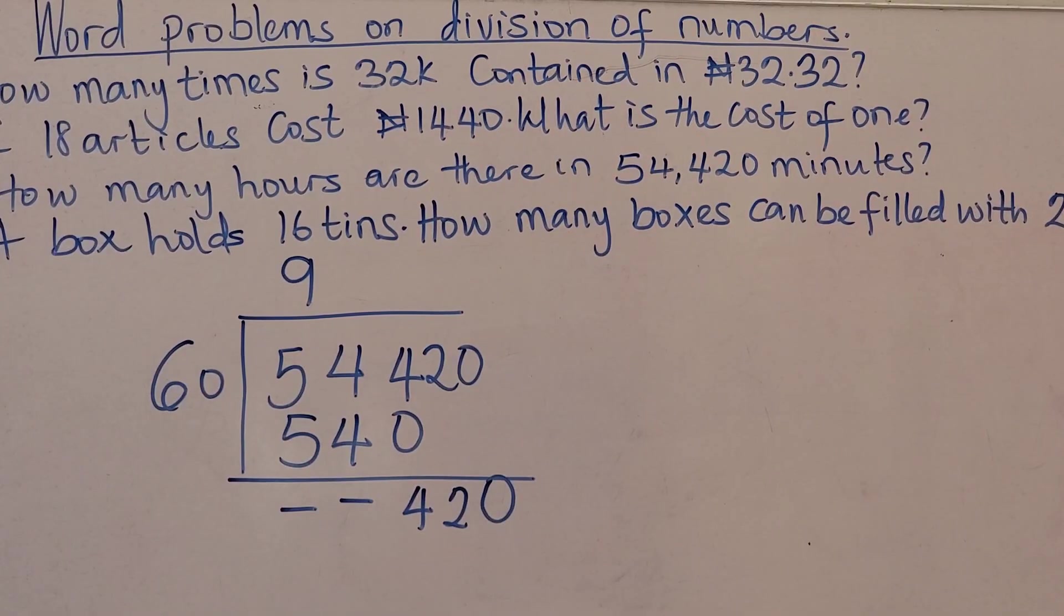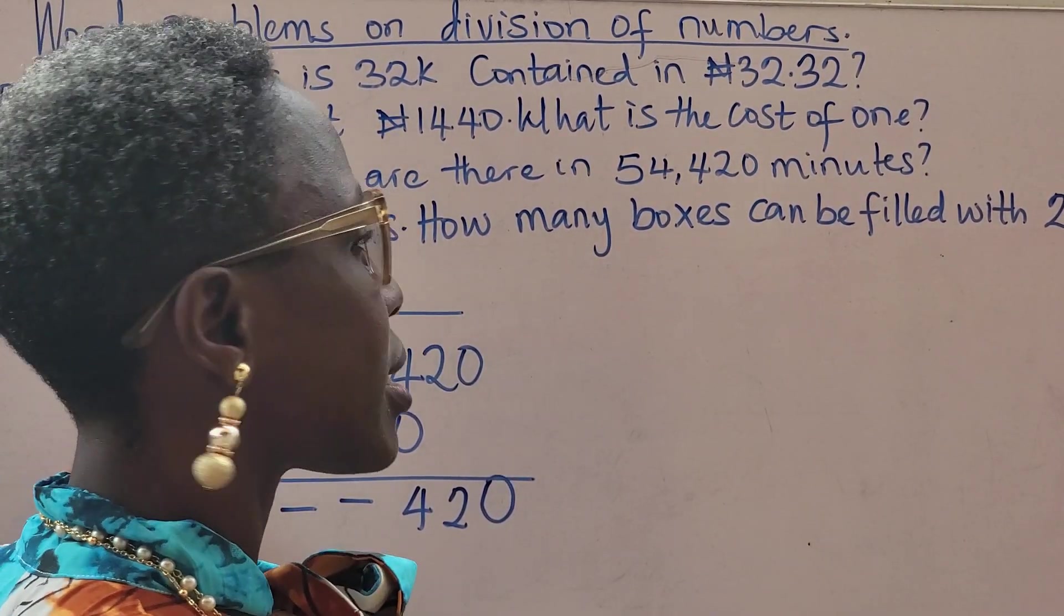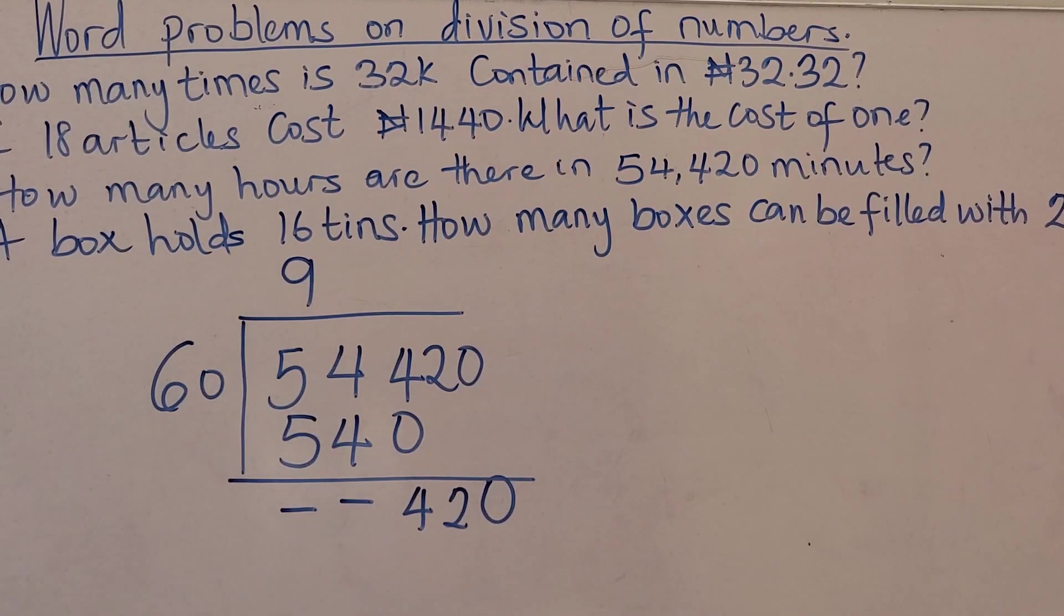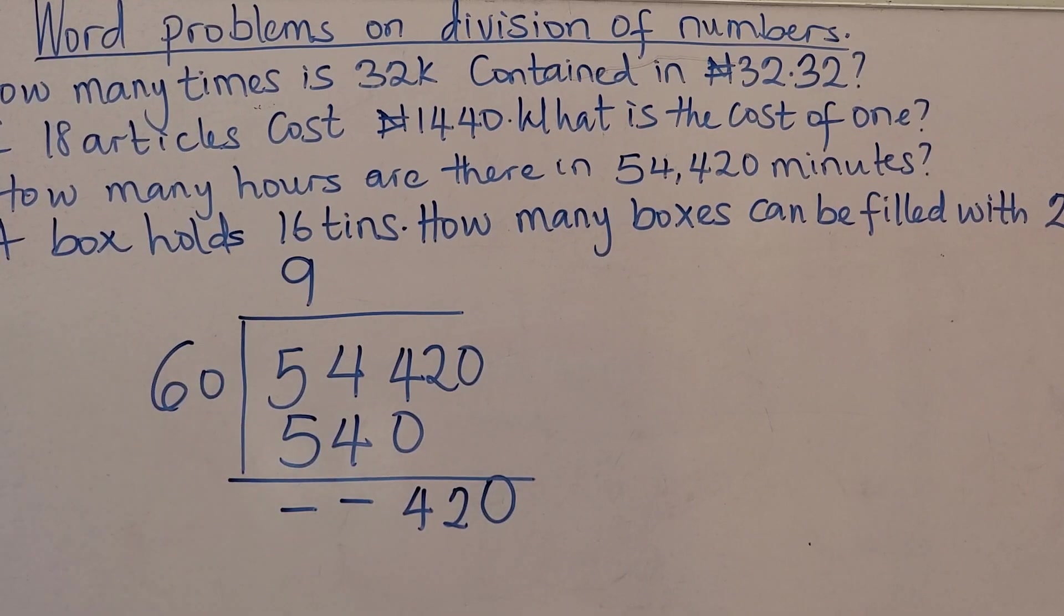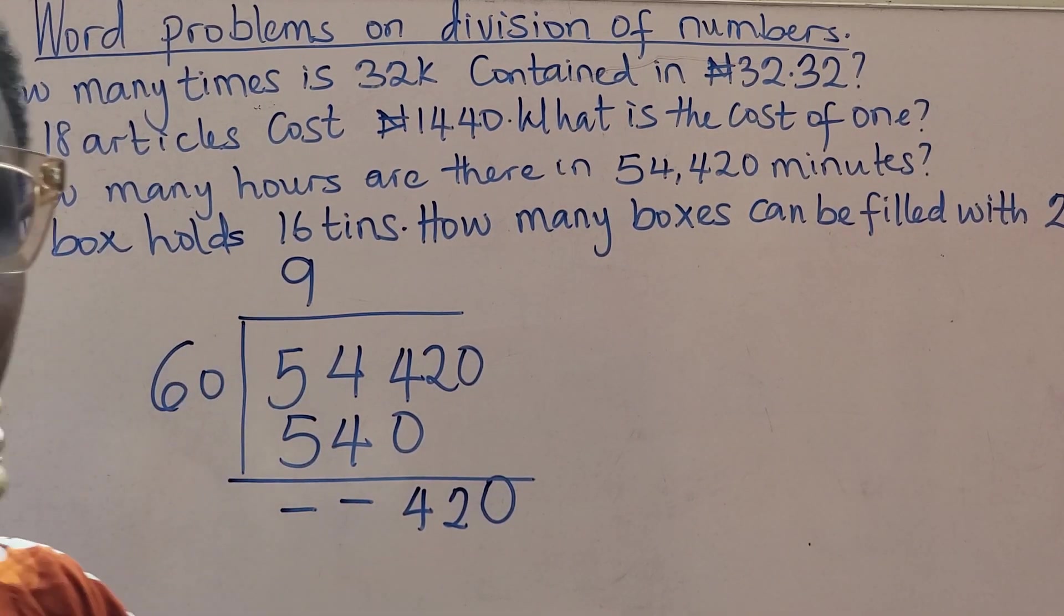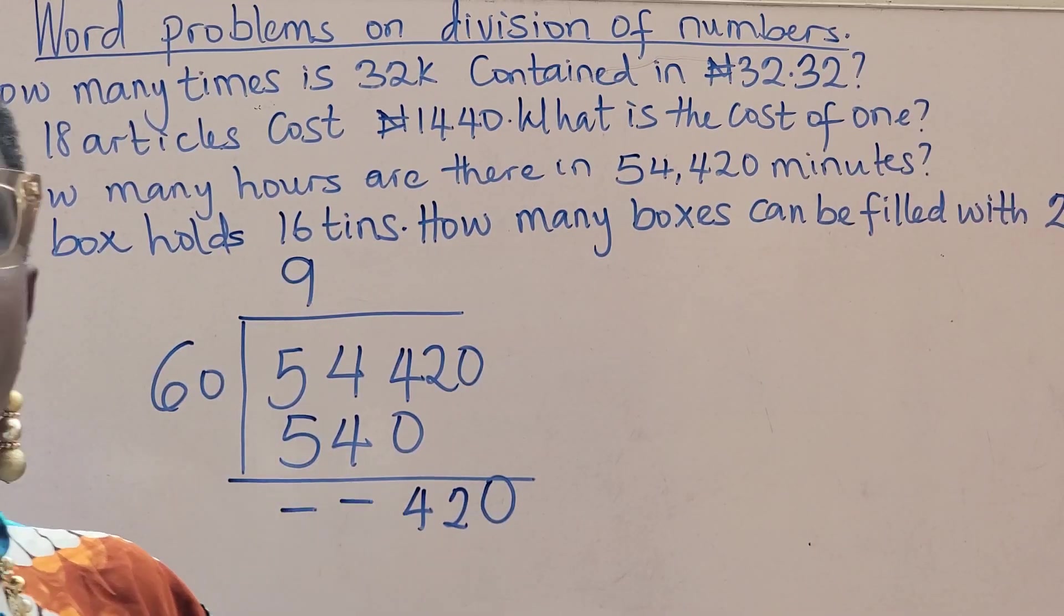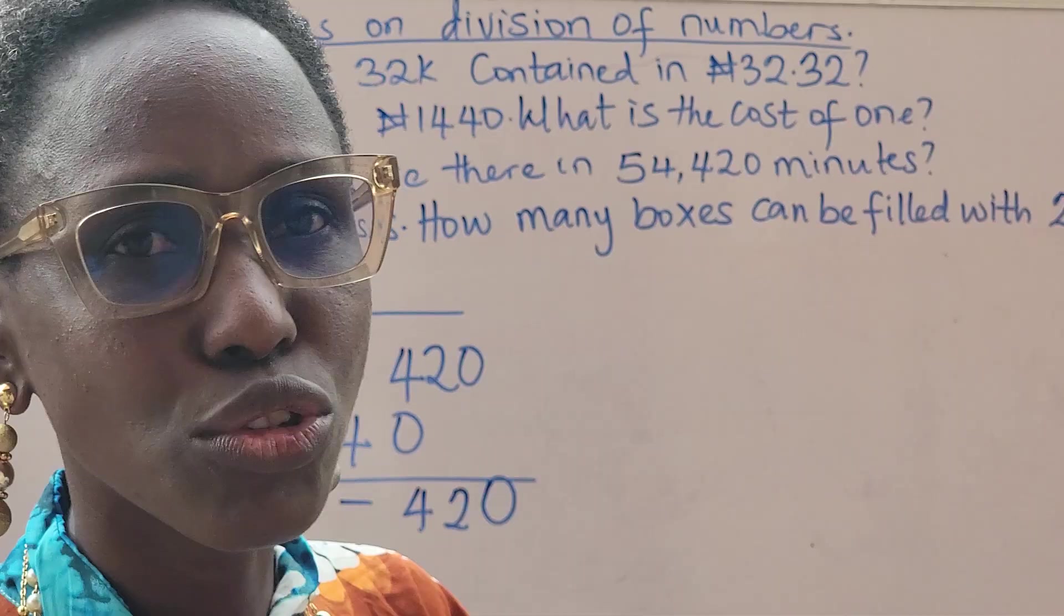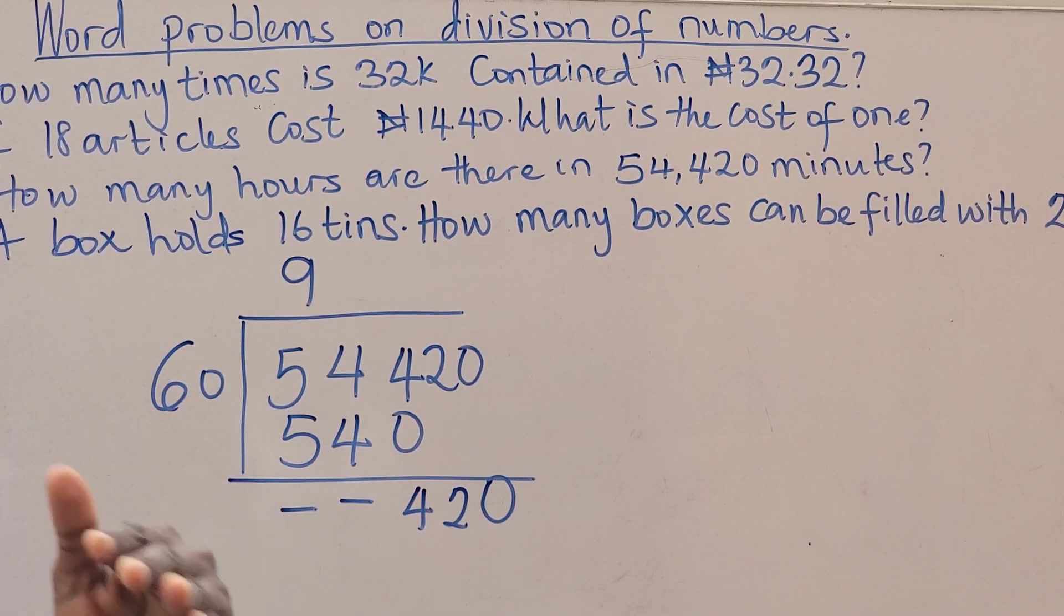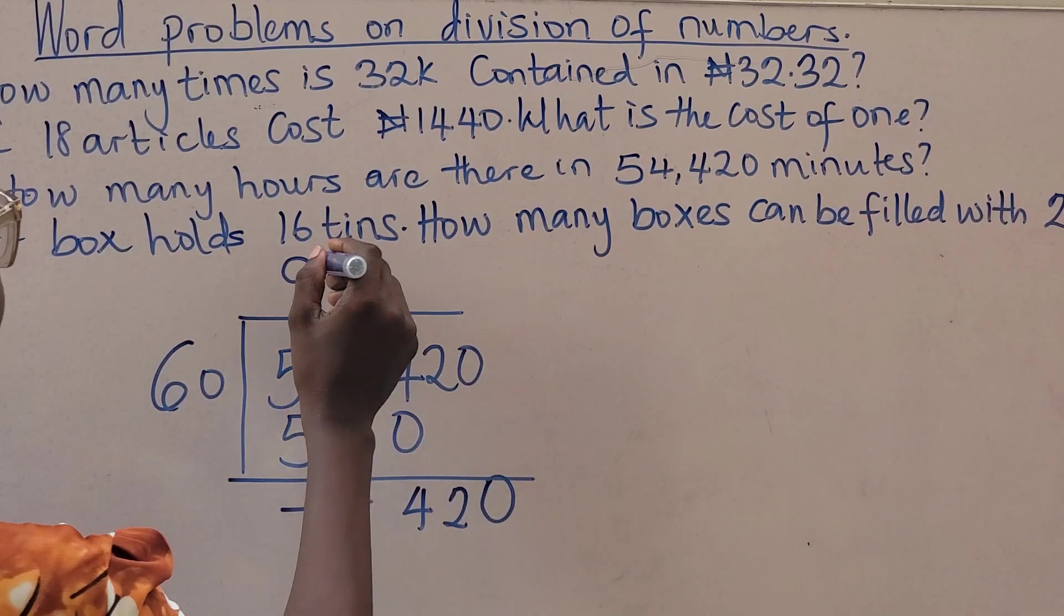Now we are left with 420. Let's go again our table. 60 times 1 is 60, times 2 is 120, times 3 is 180, times 4 is 240, times 5 is 300, times 6 is 360, times 7 is 420. So we have 7 here.